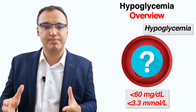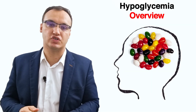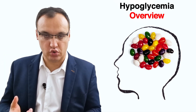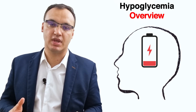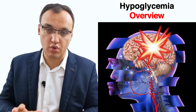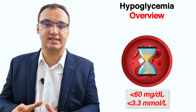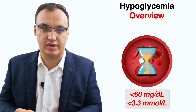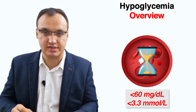Why is hypoglycemia a concern? The brain depends on blood glucose as its primary source of fuel. When there is too little glucose, it can impair the brain's ability to function. Severe and prolonged hypoglycemia may result in seizures, severe brain injury, or even death. However, in most cases, hypoglycemia is very temporary, easily treated, and usually does not have any serious consequences.